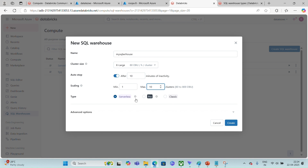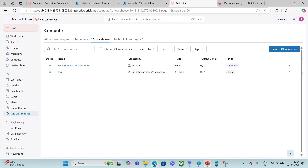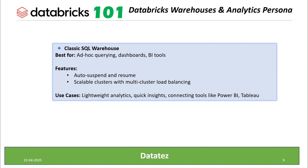Those are the different features for Serverless, Pro, and Classic. Depending on your workload, you can choose the required SQL warehouse type. Using the Classic SQL warehouse, we can execute ad-hoc queries, populate dashboards, and connect to BI tools like Power BI. We don't have advanced features with Classic, so it is suited for lightweight analytics.